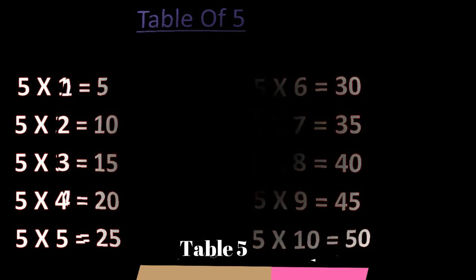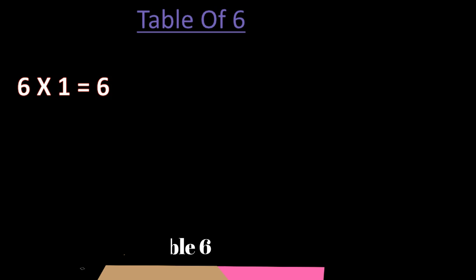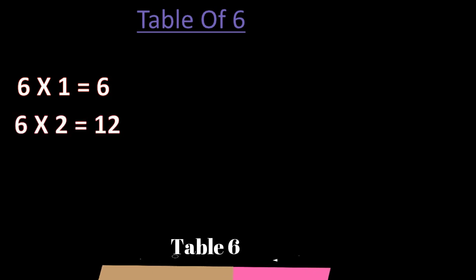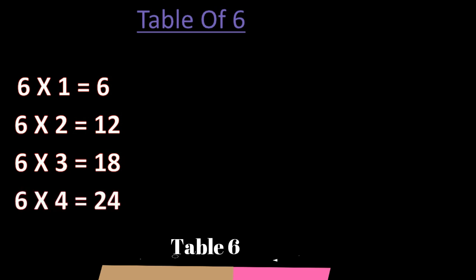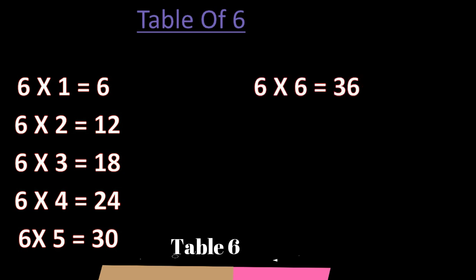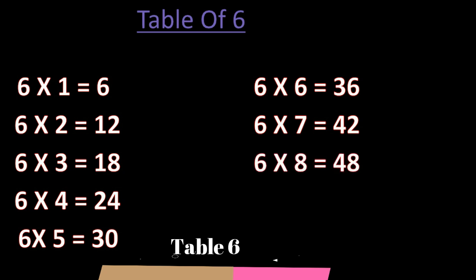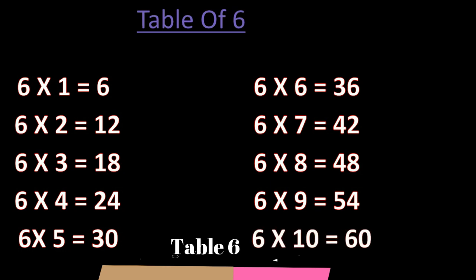Next table. Table of 6. 6 ones are 6. 6 twos are 12. 6 threes are 18. 6 fours are 24. 6 fives are 30. 6 sixes are 36. 6 sevens are 42. 6 eights are 48. 6 nines are 54. 6 tens are 60.